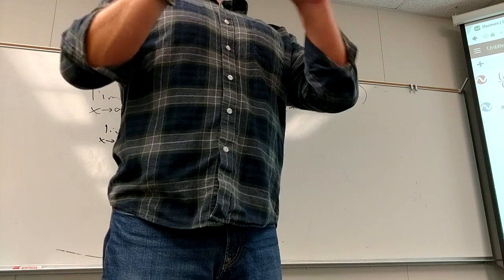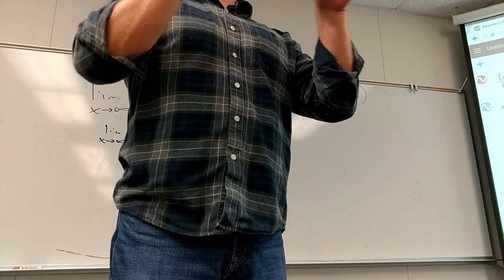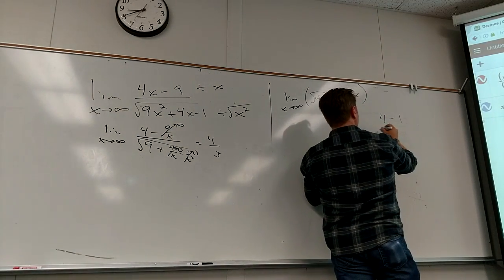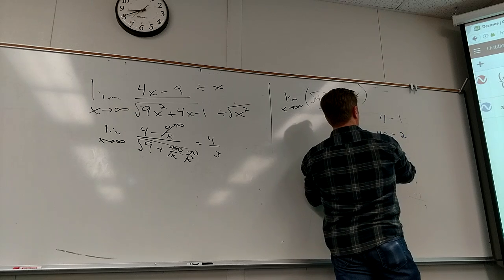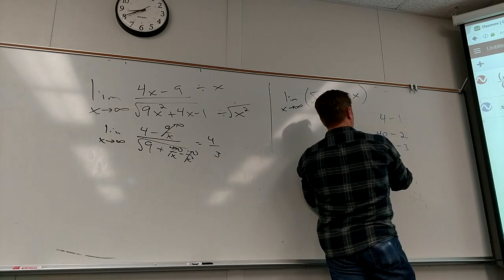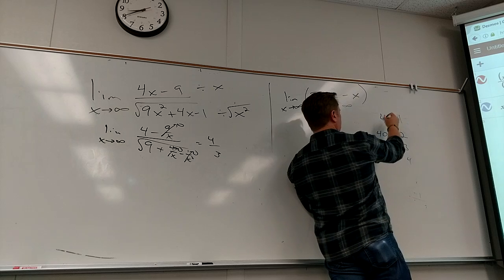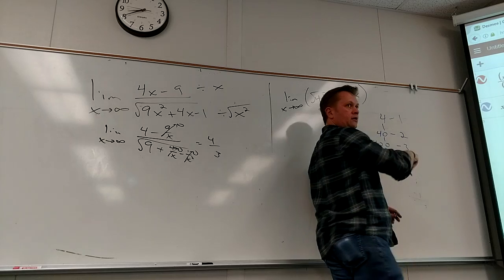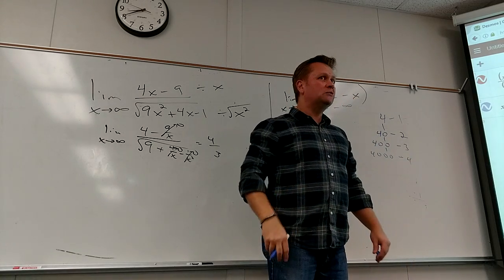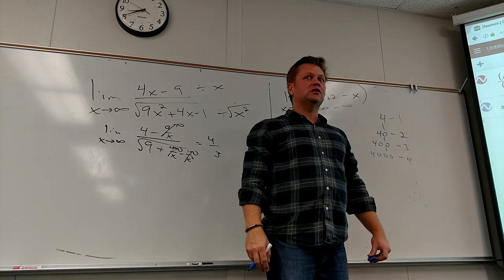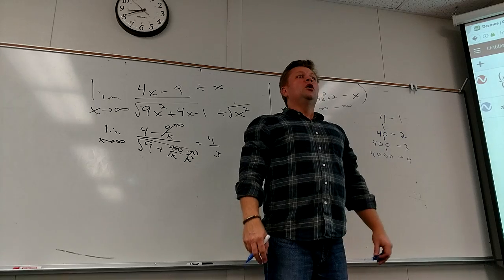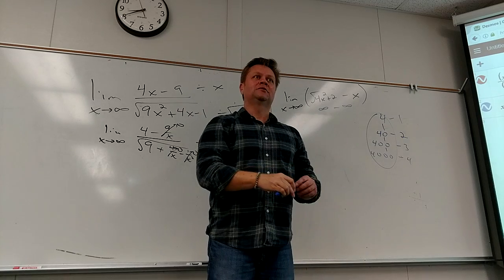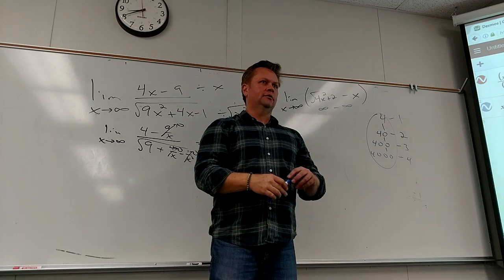This is all about who's going to infinity faster. Right? Now watch this. Let me show you an example. 4 minus 1. 40 minus 2. 400 minus 3. 4,000 minus 4. These numbers, are they going towards infinity? Yes. These numbers, are they going towards infinity? Yes. Is the difference between them becoming smaller and smaller? Why not? Because this one's going to infinity faster. Holy shit. Sorry.